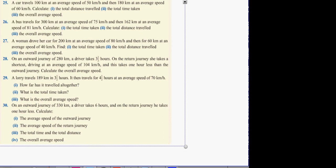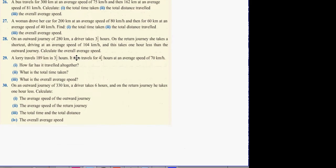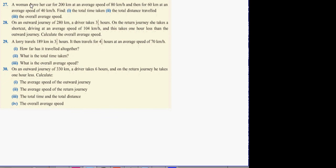Number 27 reads: A woman drove her car 200 kilometers at an average speed of 80 kilometers an hour, and then for 60 kilometers at an average speed of 40 kilometers an hour. Find the total time taken.